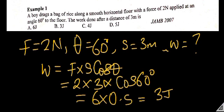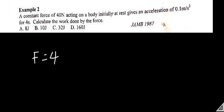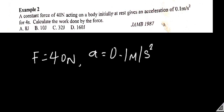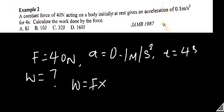The next question: a constant force of 40 newtons acts on a body initially at rest, giving an acceleration of 0.1 meters per second squared for 4 seconds. Calculate the work done by the force. We know that work is equal to force times distance. We have the force, the acceleration, and the time, but we don't have the distance.